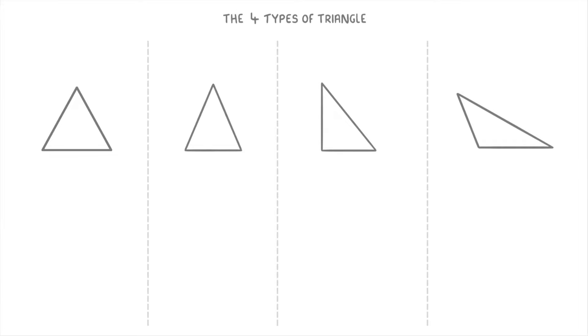In this video we're going to look at the four types of triangle: equilateral triangles, isosceles triangles, right angle triangles, and scalene triangles.